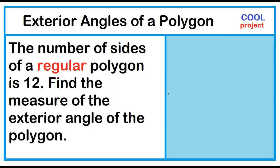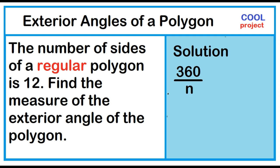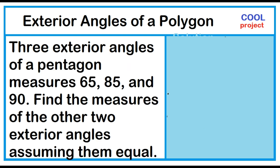The number of sides of a regular polygon is 12. Find the measure of the exterior angle of the polygon. Solution: 360 divided by the number of sides gives the measure of the exterior angle. 360 divided by 12 is equal to 30 degrees. Three exterior angles of a pentagon measure 65, 85, and 90. Find the measures of the other two exterior angles, assuming them equal.